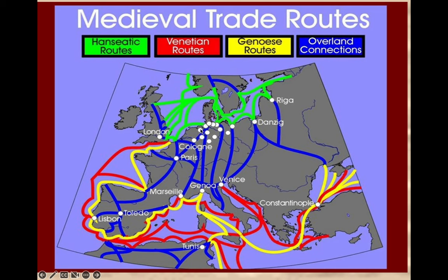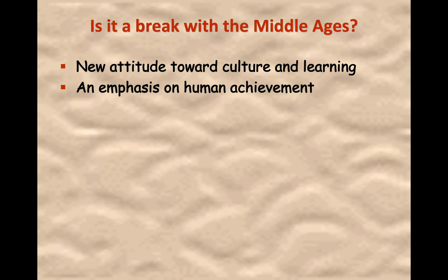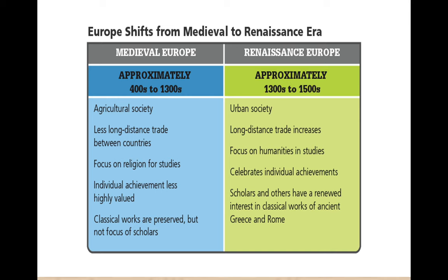For what we're looking at over the next week or so, it's really the Italian city-states — Venice, Florence, Rome, and a bit of Genoa — and how they traded with the rest of Europe. There is debate among scholars whether the Renaissance is a break from the Middle Ages or a continuation of some of its developments, but this Renaissance is fundamentally about culture and a new focus on human achievement.